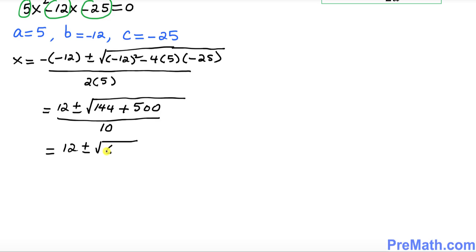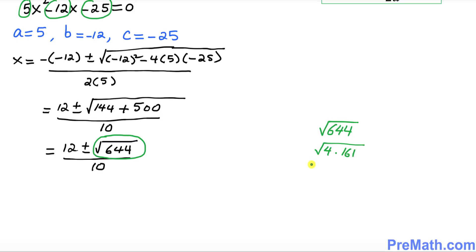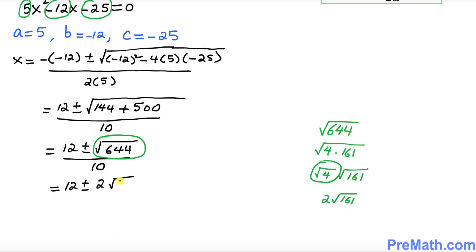Let's simplify the radical. Square root of 644 can be written as square root of 4 times 161. Splitting into two square roots: the square root of 4 is 2, so this becomes 2 times the square root of 161. Therefore the expression is 12 plus or minus 2 times square root of 161, divided by 10.